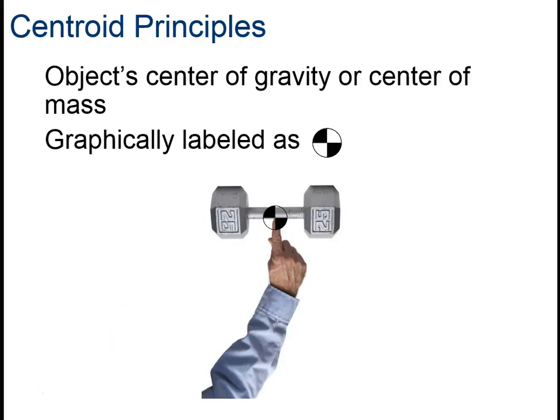So a centroid is where the center of gravity or the center of mass is. And we use this symbol right here to show where the center of it is. And we could also think about it as a balancing point.